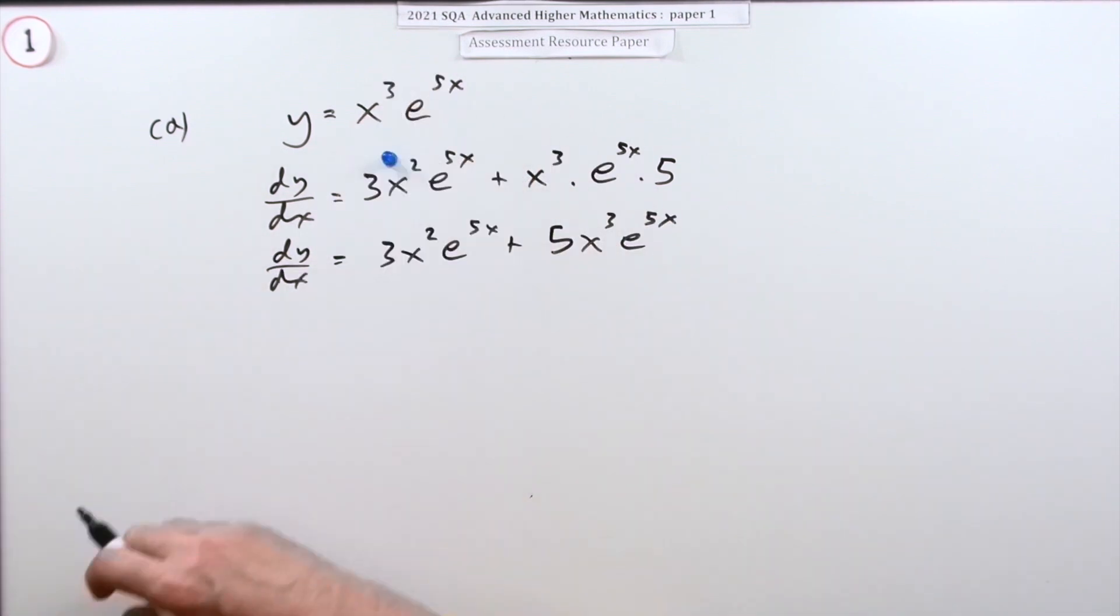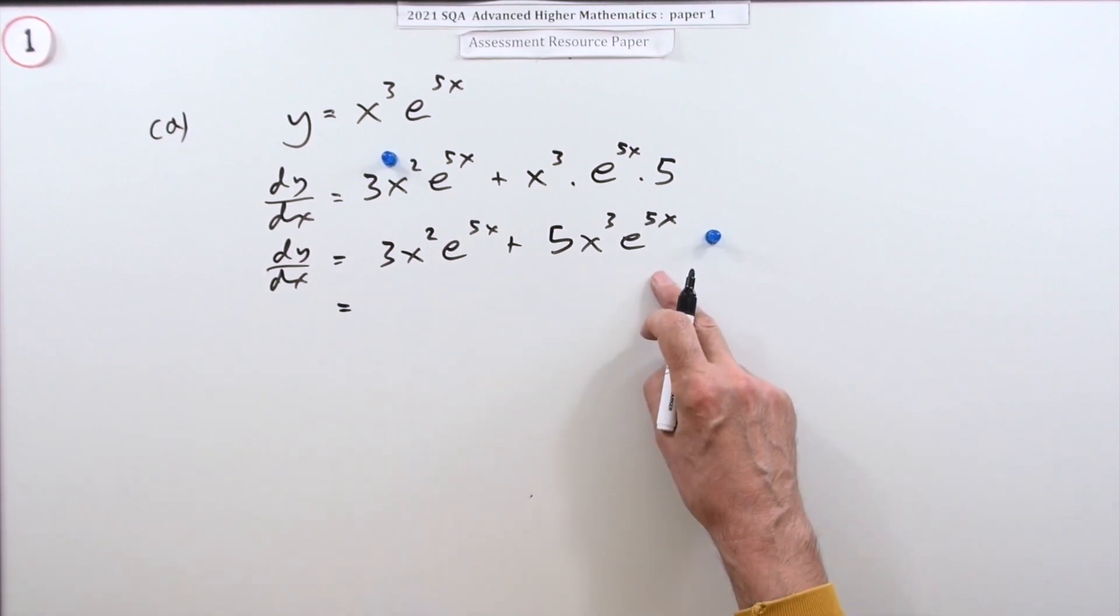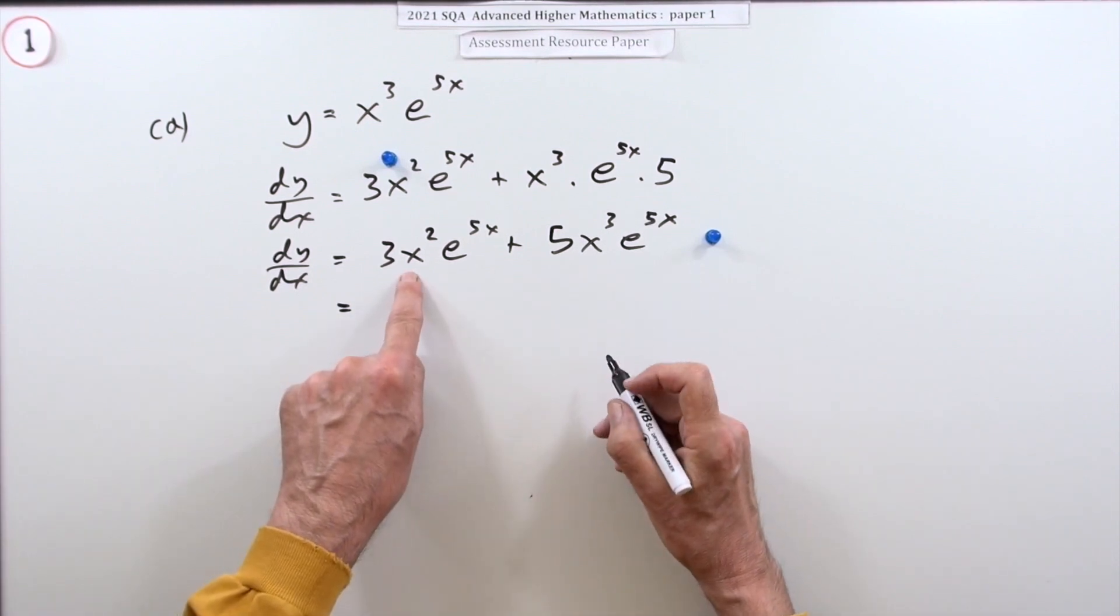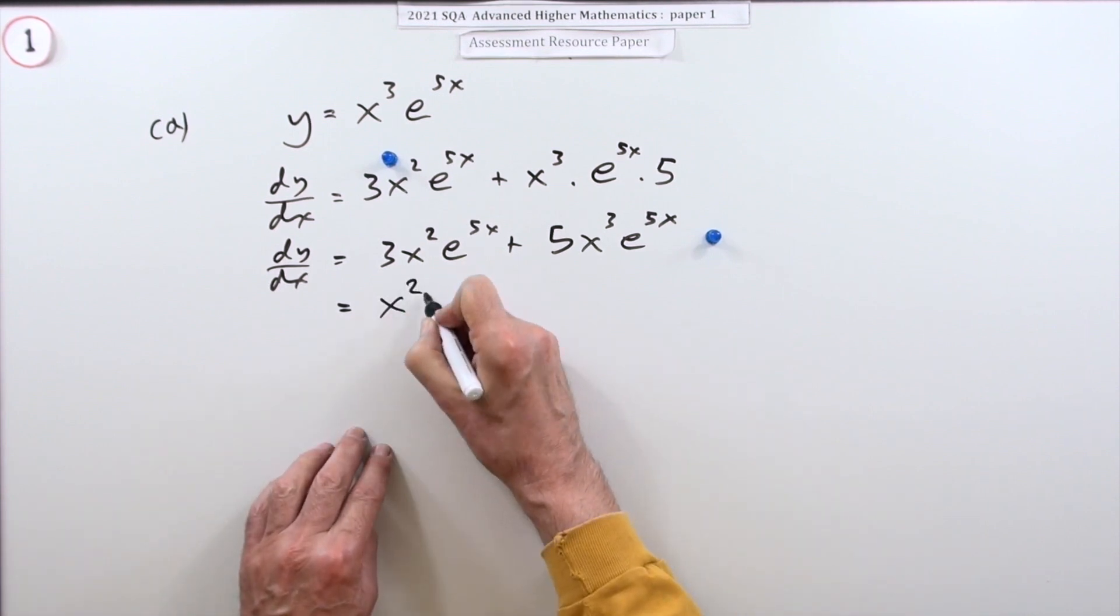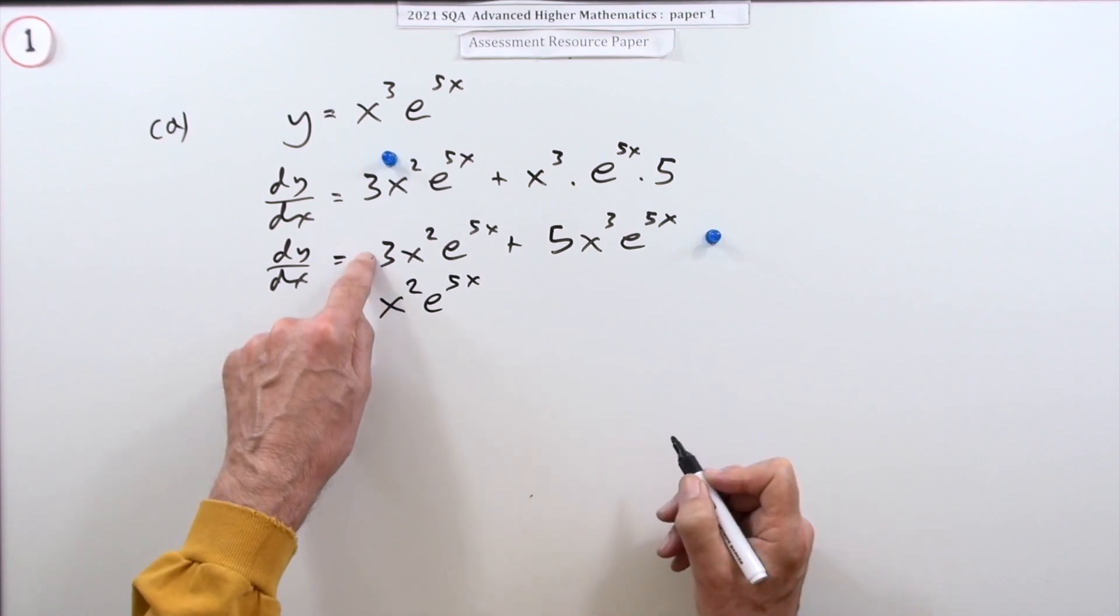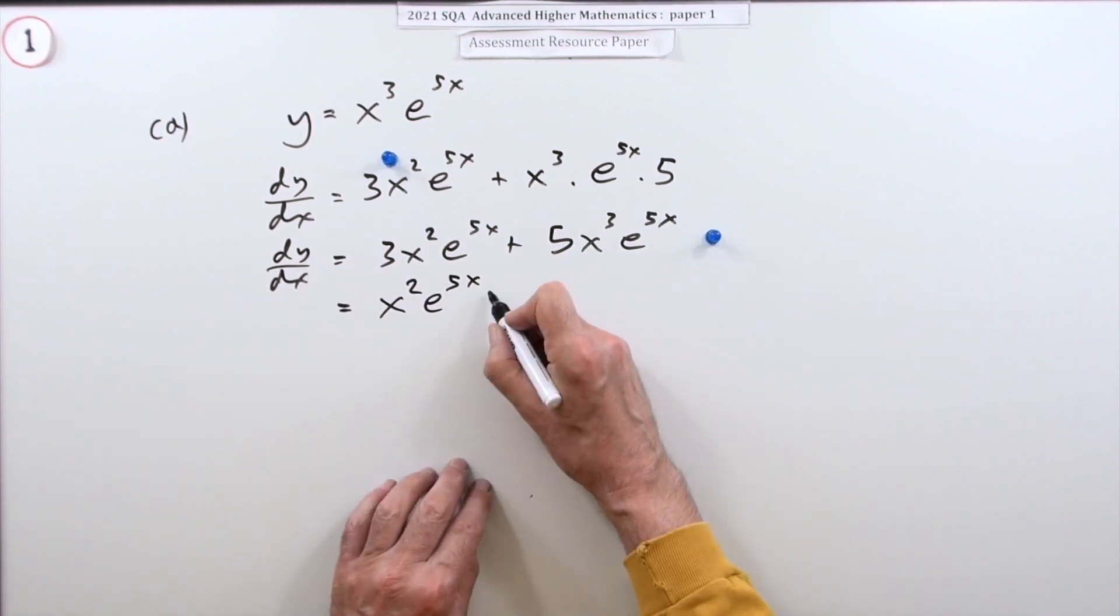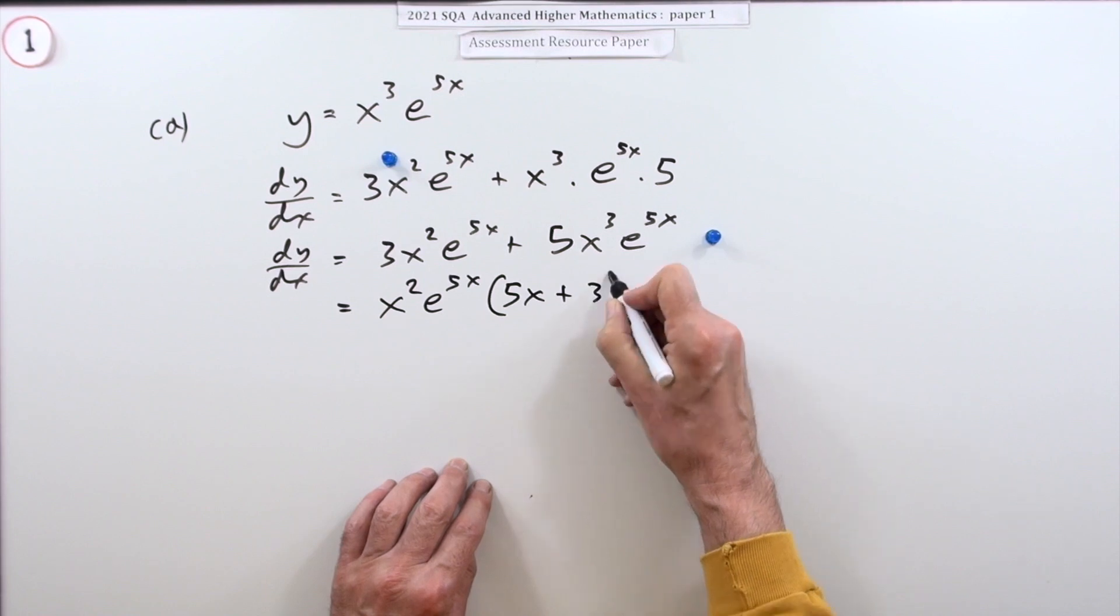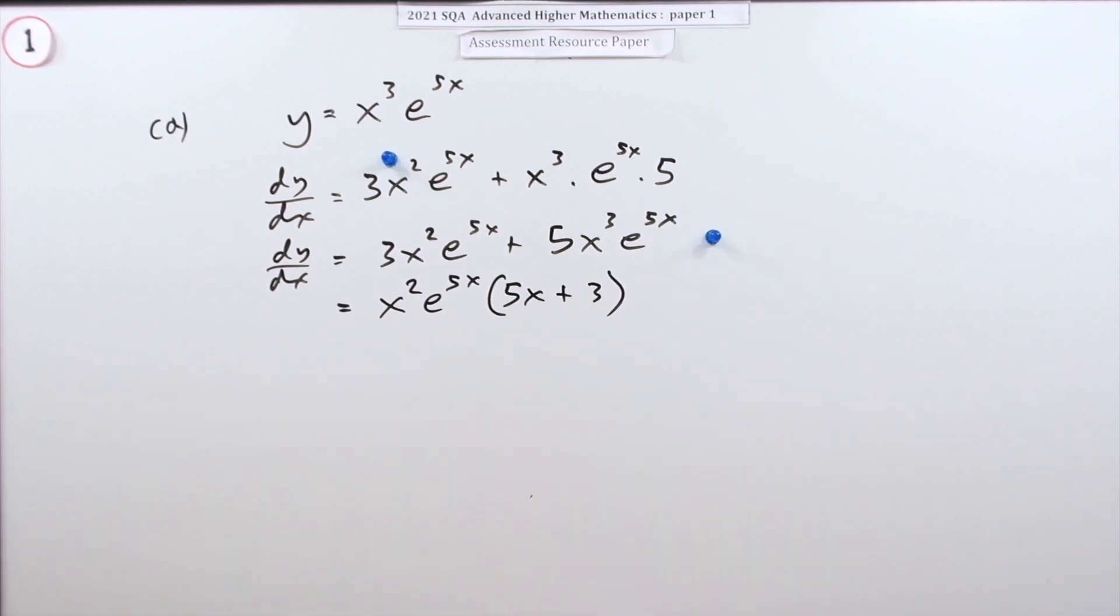Do one of them first and then do the other one and they're quite happy with that because it did say just differentiate it. However that could be tidied up because they've both got an x² and they've both got an e^(5x). That leaves a 3 there and a 5x there, so times - I'll put it 5x + 3, or maybe I could have put that to the front. That would have been neater. We didn't need to do that. It was enough just to go here.